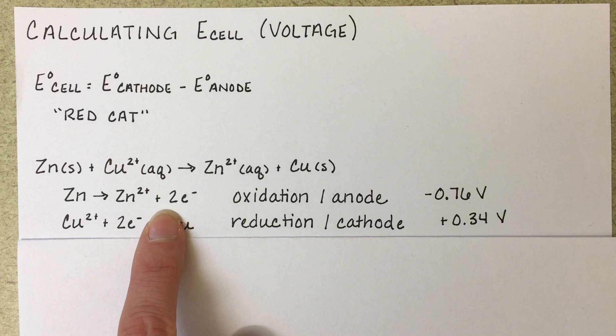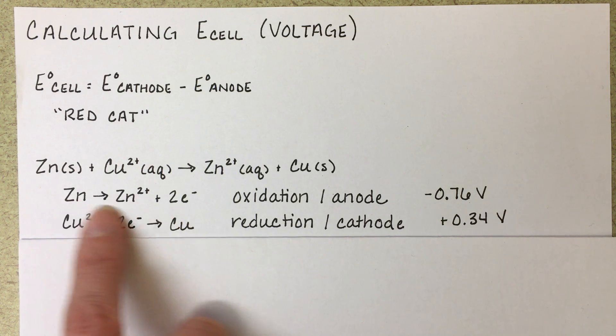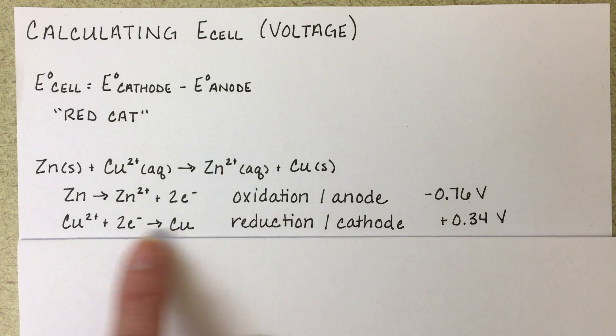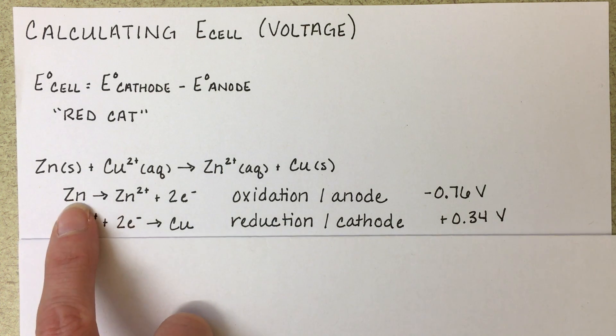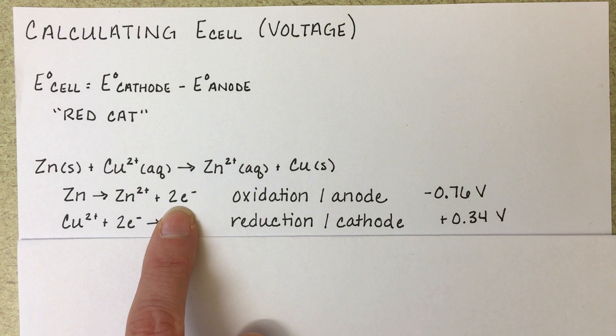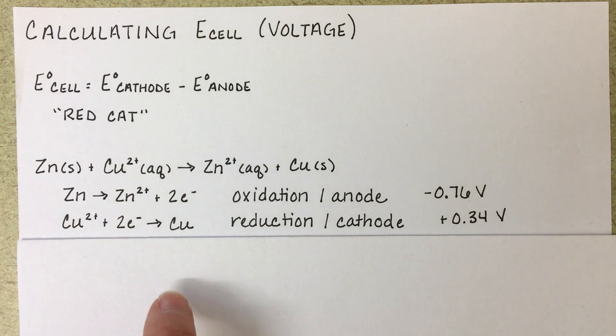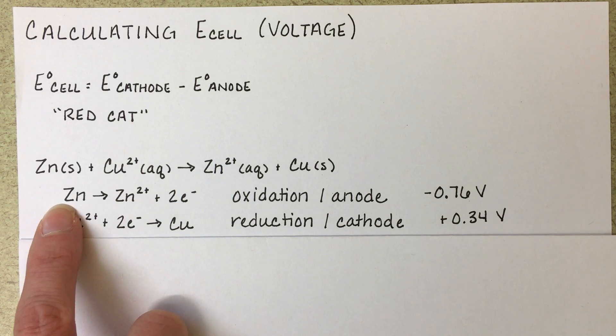This reaction is going to be harder to find, mostly because in your table, everything is written as a reduction, and this half reaction is an oxidation. So what you're looking for is not this reaction exactly, but the reduction version of this reaction, which is just a backwards reaction. So you're looking for zinc-2+, plus two electrons, going to zinc-0.